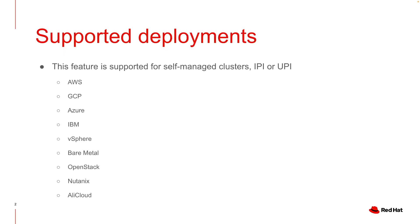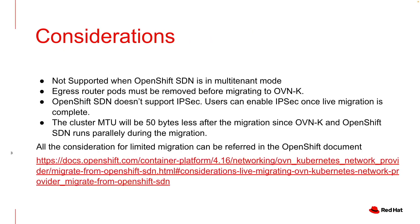Before running the limited live migration process, we need to make sure we follow these key considerations. It is not supported when OpenShift SDN is running in multi-tenant mode. If there are any egress router pods running in the cluster, we need to manually remove them before migrating to OVNK. Since SDN does not support IPSec, we cannot enable it during migration, but once migration completes, you can enable IPSec. The cluster MTU will be 50 bytes less during migration because we leverage hybrid overlay networking. Consider visiting the documentation to look into all considerations that might affect your cluster during this limited live migration process.